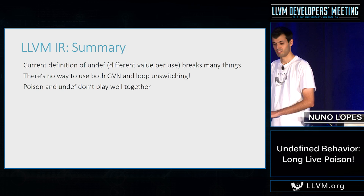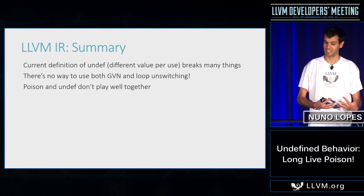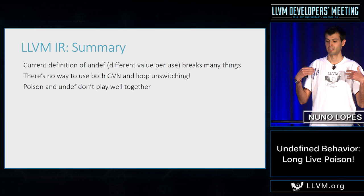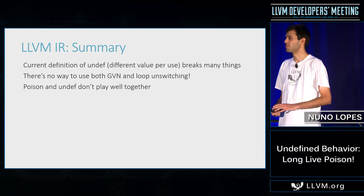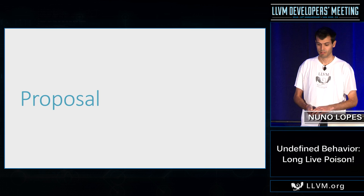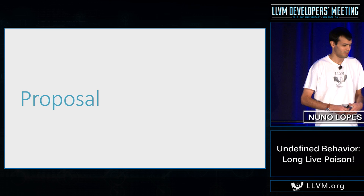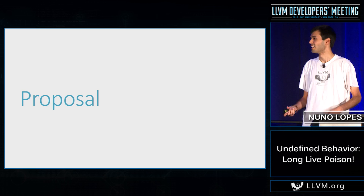To summarize: poison and undef are well justified to exist, but we have problems. The current definition of undef where each use is a different value is problematic. There's no way right now to soundly use GVN and loop unswitching at the same time. Poison and undef don't actually play very well together. The question is: can we fix these problems? Many very smart people have tried in the past and failed. But apparently now we have something that seems to work, and the proposal is actually pretty simple.